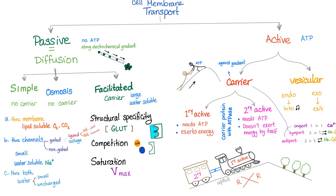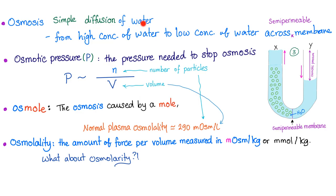Cell membrane transport is either passive or active. Passive requires no ATP, such as osmosis. Osmosis is simple diffusion of water — from high concentration of water to low concentration of water across a semipermeable membrane, or equivalently from low concentration of solute to high concentration of solute. Osmotic pressure is the pressure needed to stop osmosis. An osmol is osmosis caused by a mole — we care about the number of particles, not mass or size. Osmolality is the amount of osmols per volume, measured in milliosmol per kilogram. Osmolarity is per liter.